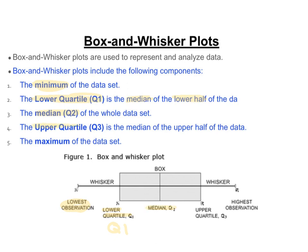Then we have the upper quartile or quartile 3, which is the median of the upper half and goes as the other side of our box, referred to as Q3. And then the maximum of the data set is the highest observation, which goes all the way to the right.